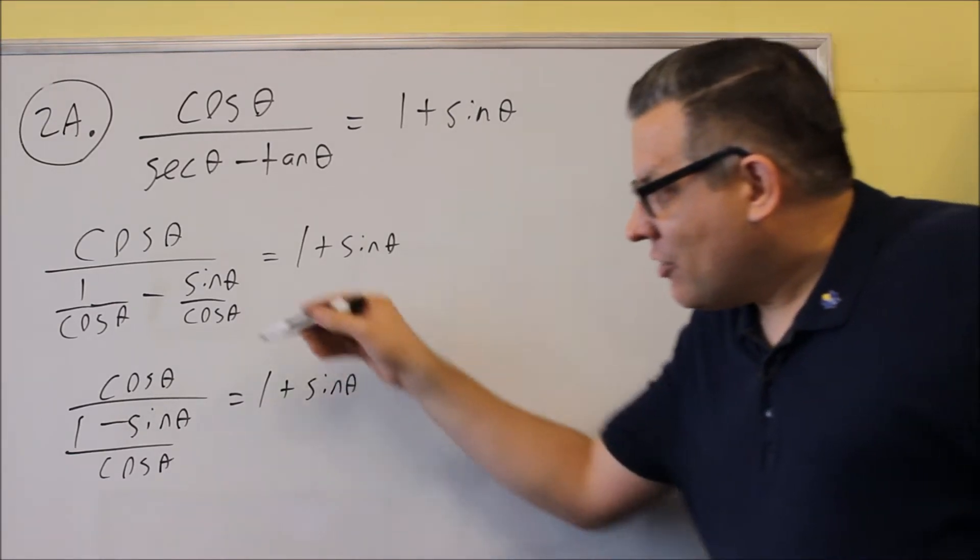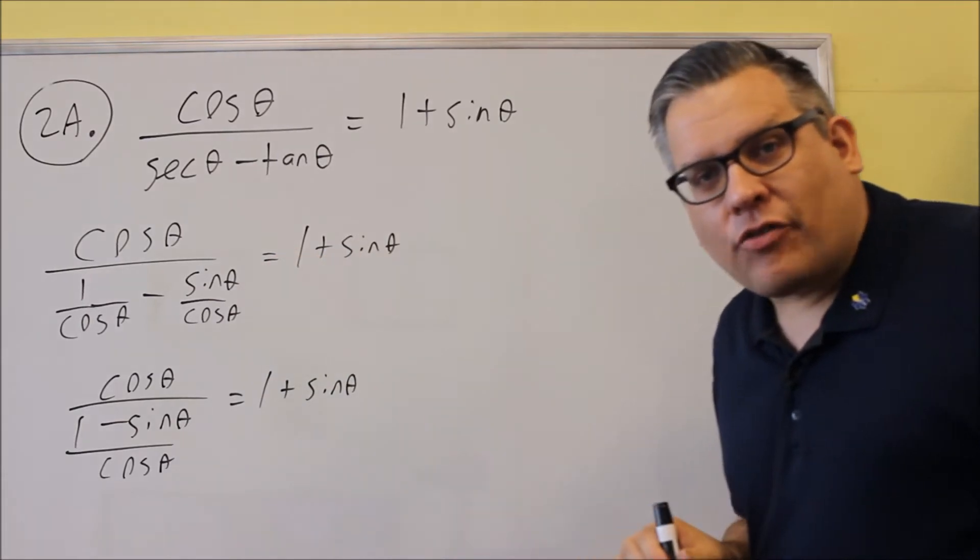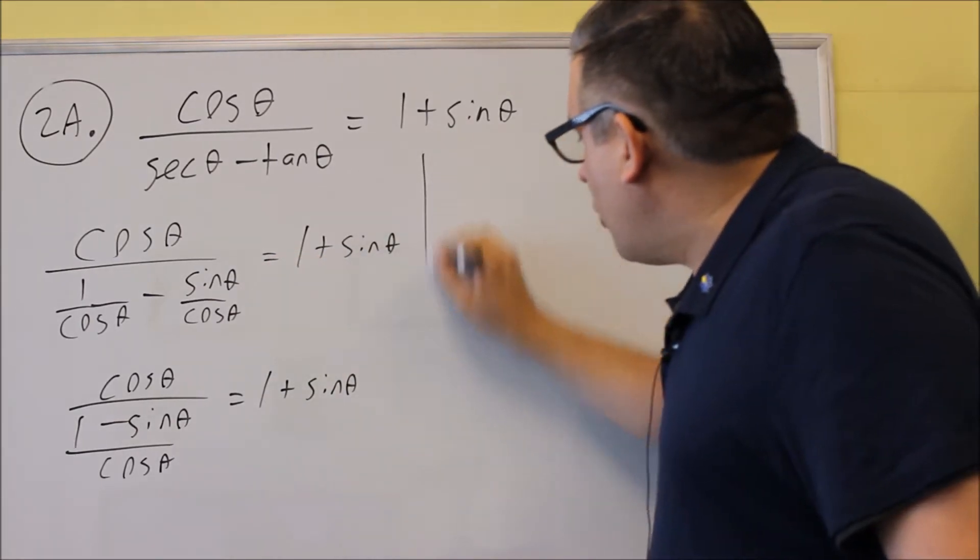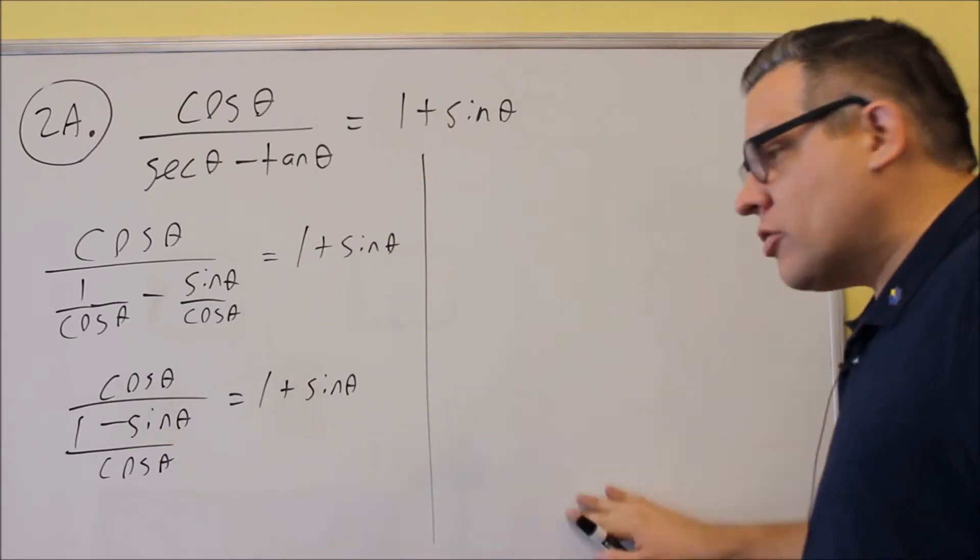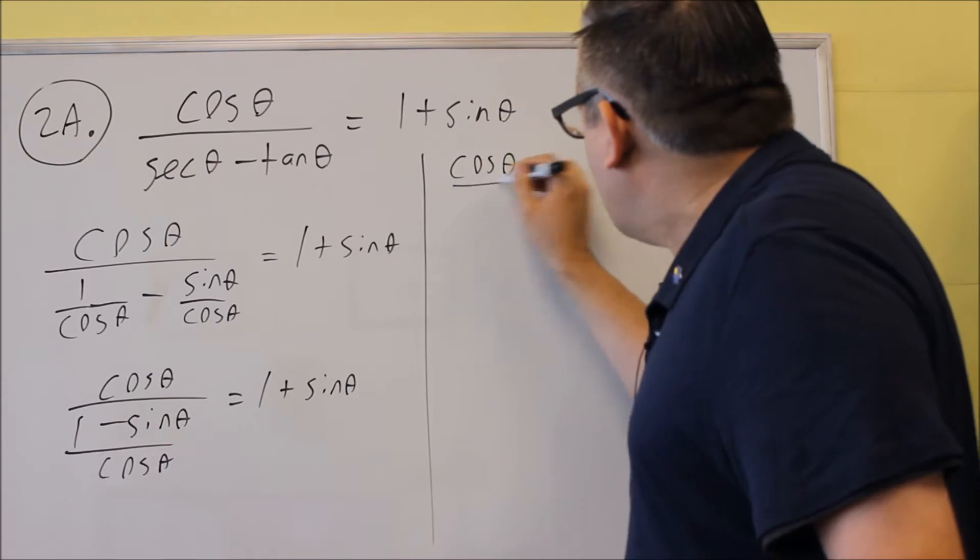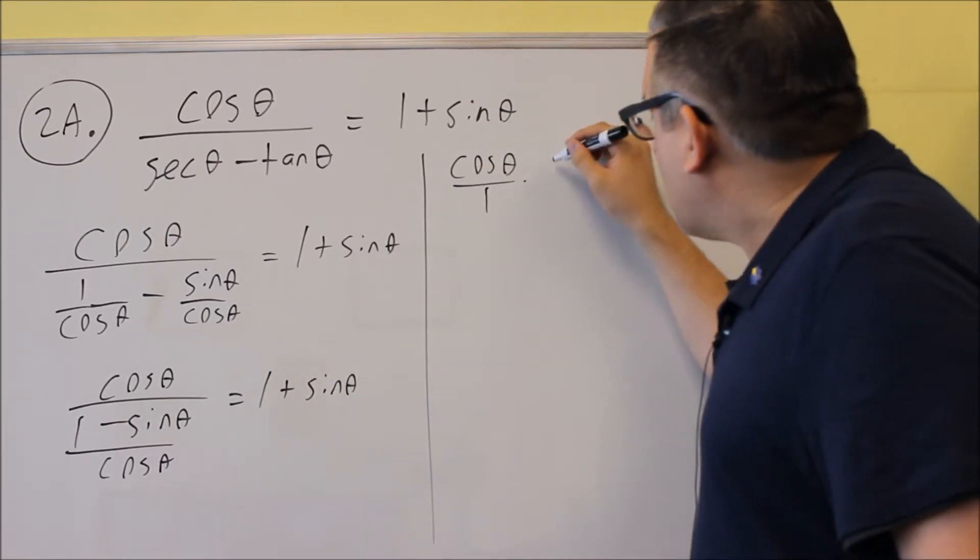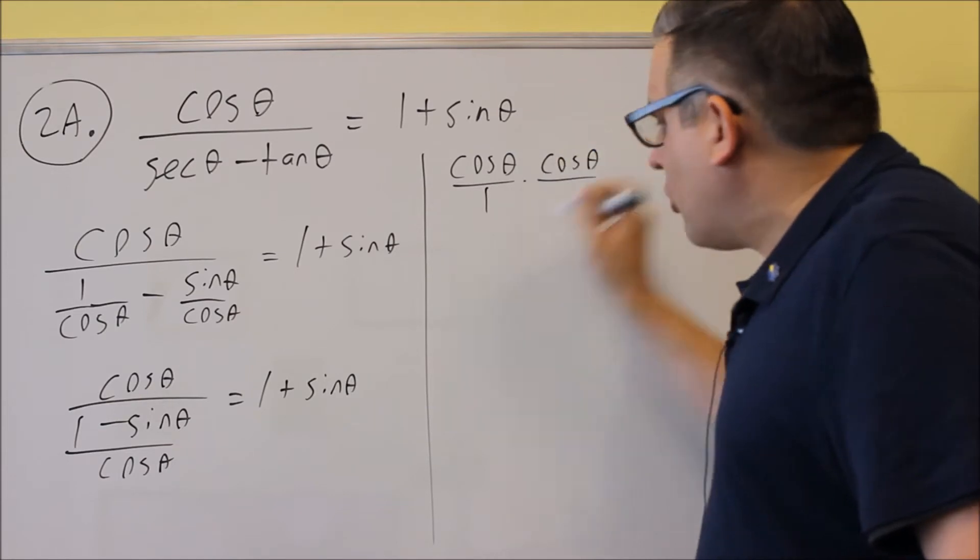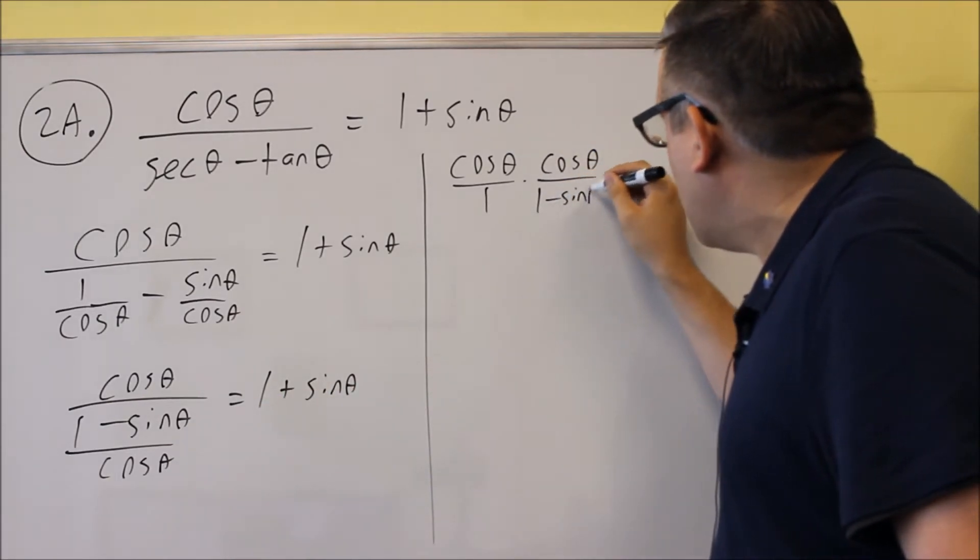Now what we have is a fraction over a fraction. So we want to flip and multiply the fractions. And so I'm going to continue this kind of over here, so it kind of goes down, and it goes down this way. I'm going to have cosine on top. Cosine theta over one is the fraction you have on top there. We're going to multiply this by the reciprocal of this one, which is cosine over one minus sine theta.